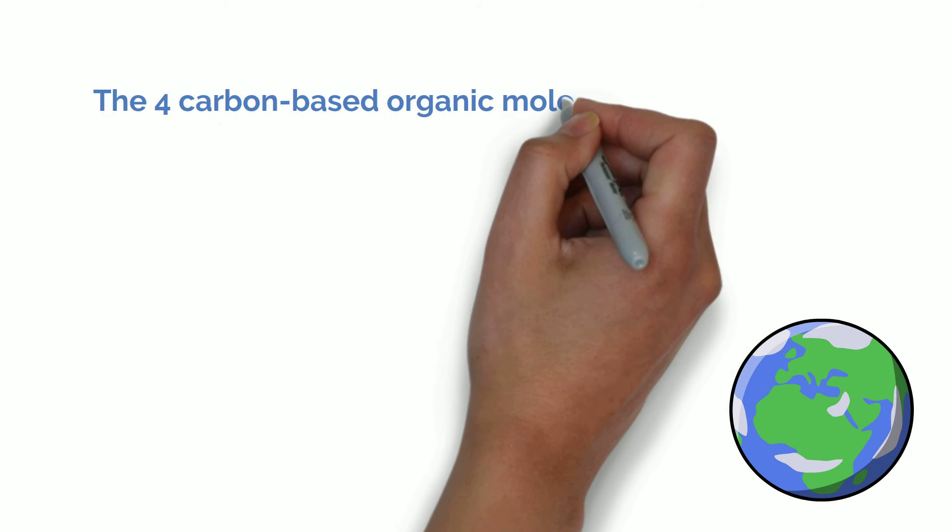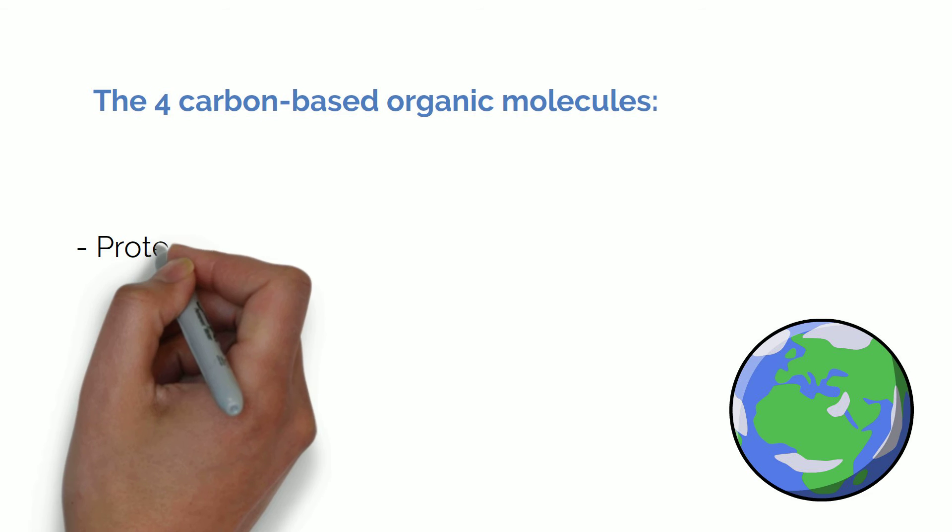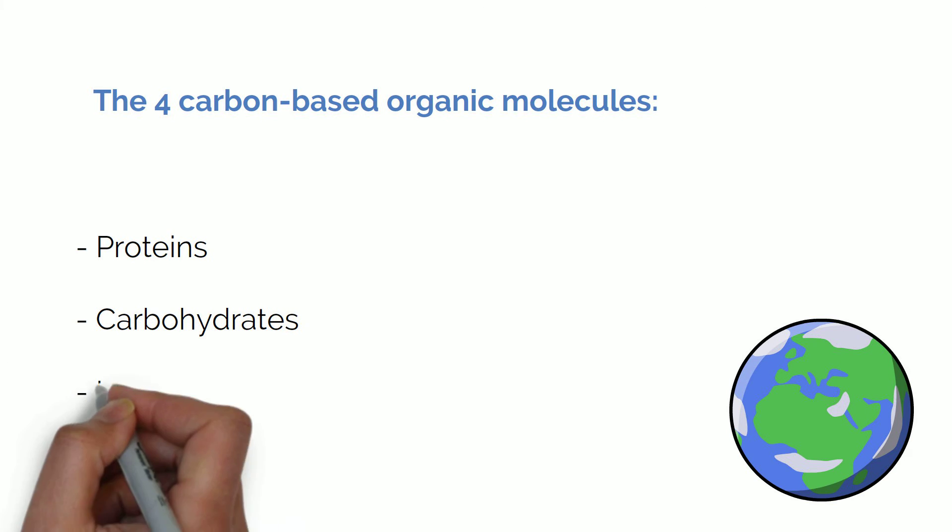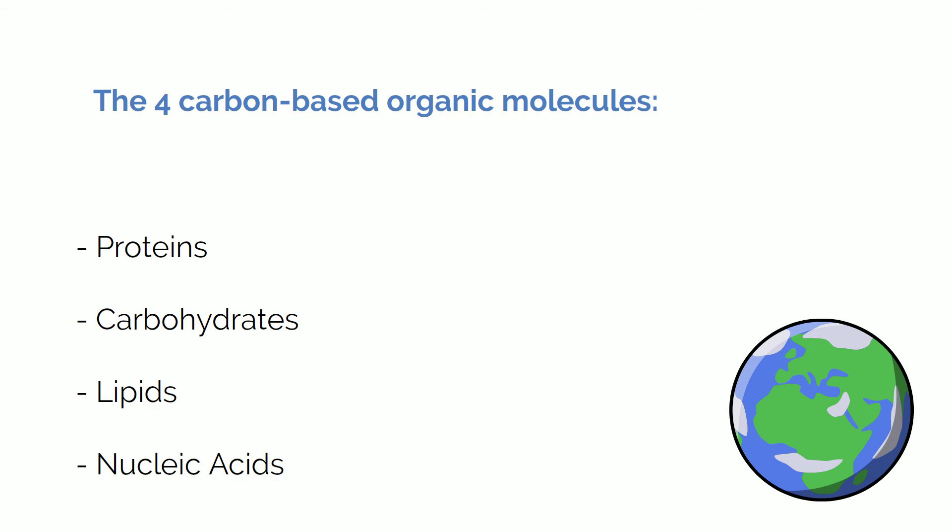The cells of all living things are made of four important types of organic or carbon-based molecules. These are proteins, carbohydrates, lipids and nucleic acids. These are essential to a living organism's function and survival on a molecular level.